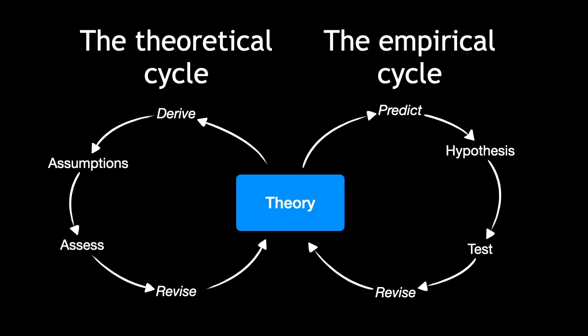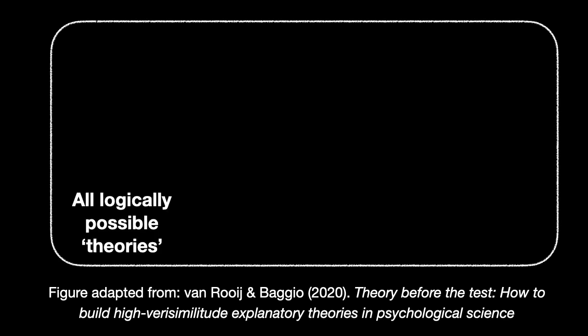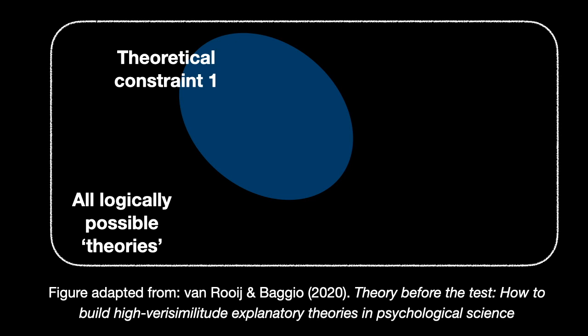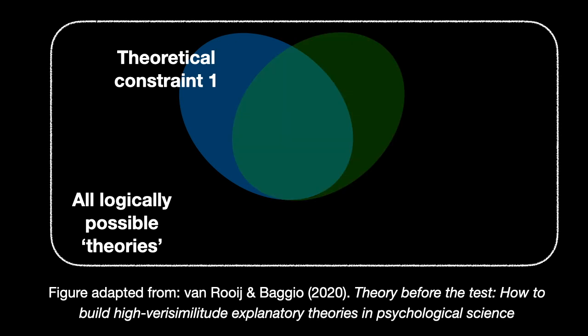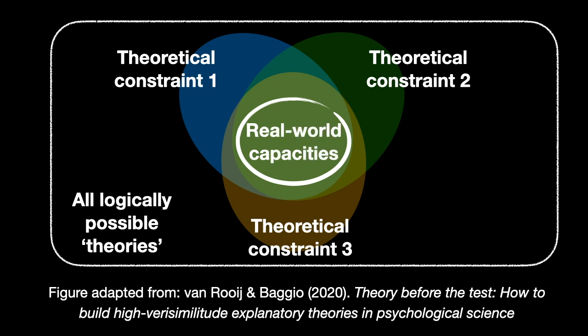This is illustrated by the following figure. We are looking in the infinite set of all logically possible theories for some that adequately explain our target phenomena. Recall these are real-world capacities. Different theoretical constraints used in the theoretical cycle can function as a search line, and by combining them we may be able to demarcate a smaller area of the vast space of possibilities where good theories of real-world capacities can be found, because all of them are according to the constraints at least possible.